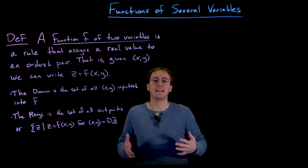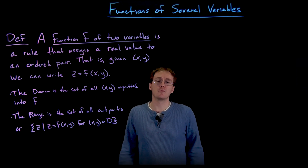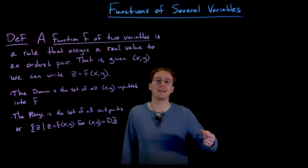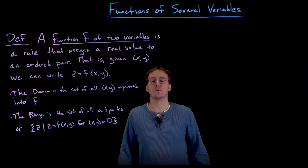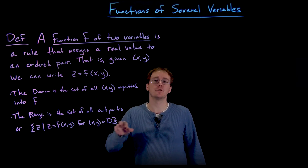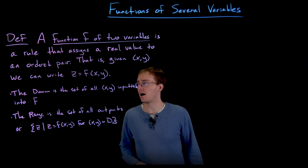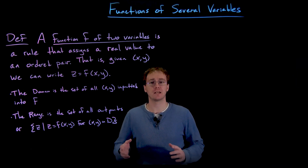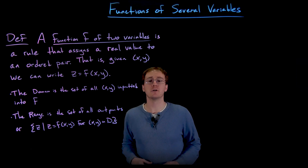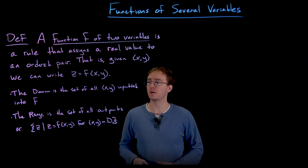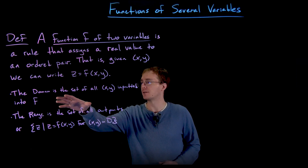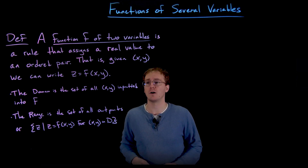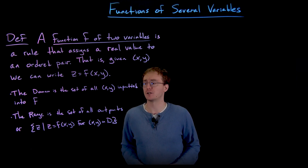A function of two variables is the next step up from a function of a single variable. So instead of writing y as a function of just x, we're now writing z as a function of two variables x and y. We have inputs and outputs for these functions of several variables, and the inputs are still going to be the domain for our function. We think of the domain as the set of all ordered pairs or points x comma y that we input into our function f.